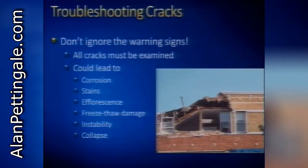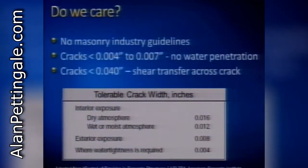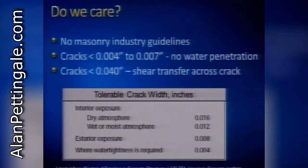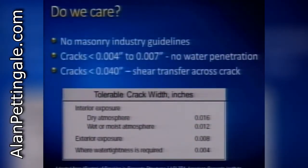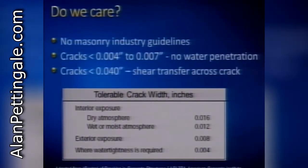Cracks can be very detrimental to your building. From a structural standpoint, cracks can interrupt structural continuity and could possibly lead to instability or collapse. But all cracks let in water, and water is ultimately the enemy of our masonry materials — whether that's brick, stone, mortar, or metals inside our walls. Moisture infiltration is a big issue. We can tolerate pretty wide cracks structurally — good shear transfer up to 40,000ths of an inch wide. But anything more than about four to seven thousandths of an inch will let significant moisture into the wall.